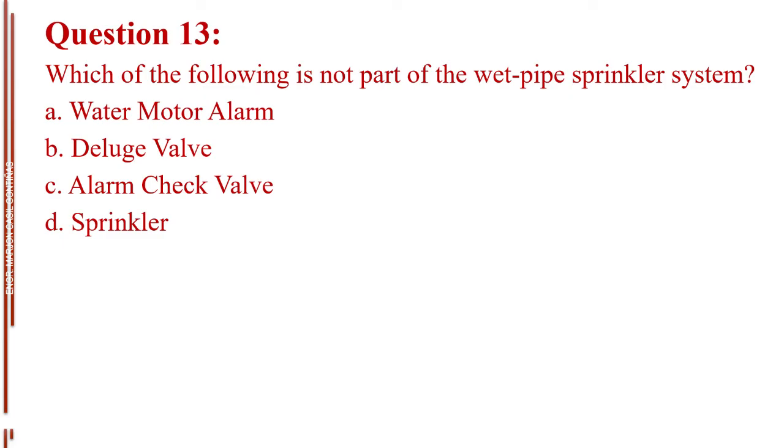Question number 13. Which of the following is not part of the wet pipe sprinkler system? Letter A, water motor alarm. Letter B, deluge valve. Letter C, alarm check valve. Letter D, sprinkler. The answer is Letter B, deluge valve.